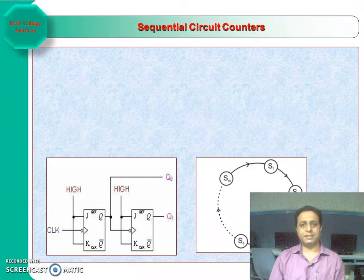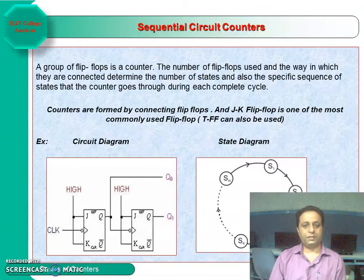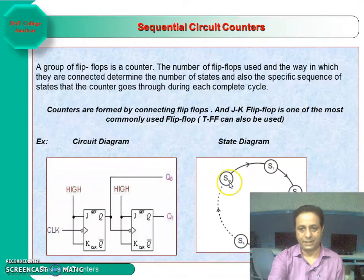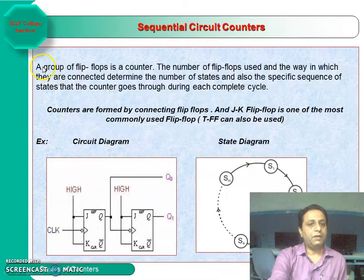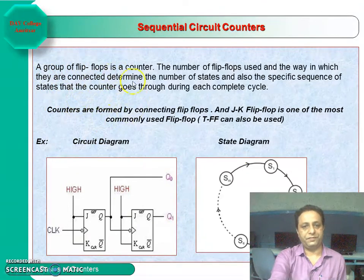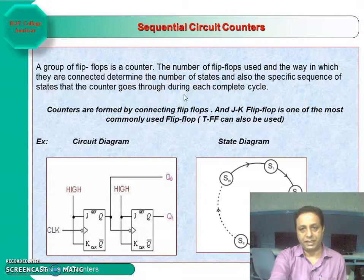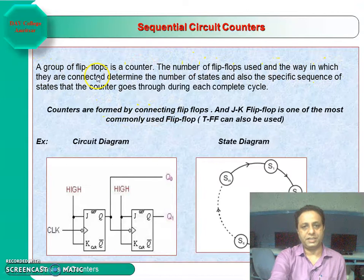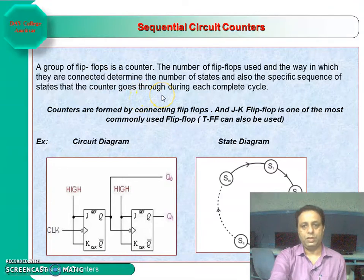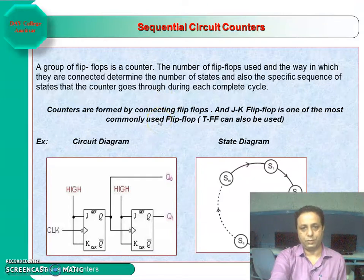This is a circuit diagram and state diagram of a counter. The makeup of the counter is a combination of flip-flops arranged in a cascading manner. The number of flip-flops used and the way they are connected determine the number of states and the specific sequence of states the counter goes through each complete cycle. The flip-flops commonly used are JK flip-flops, but T-type flip-flops can also be used.